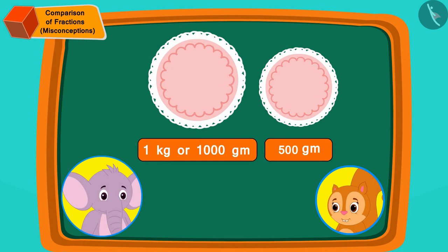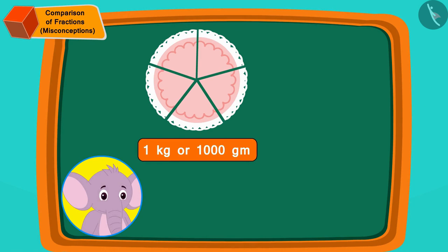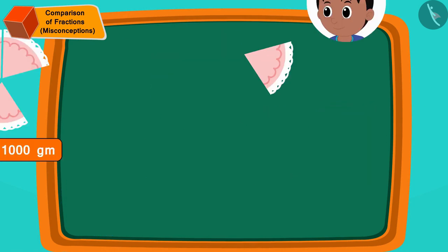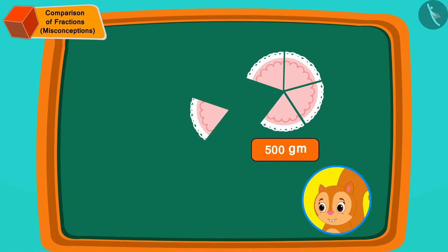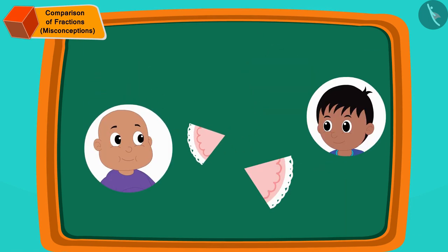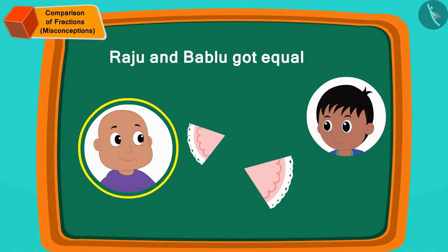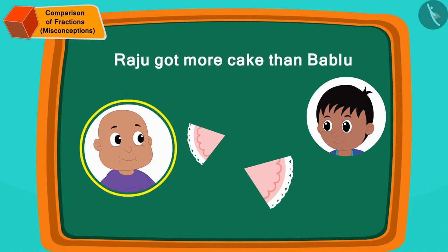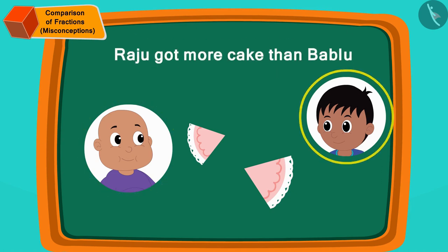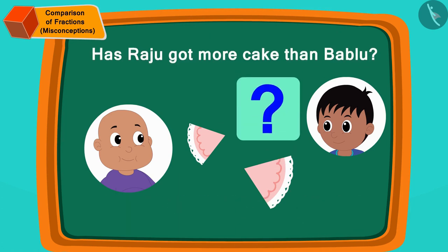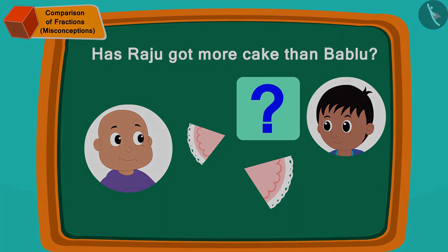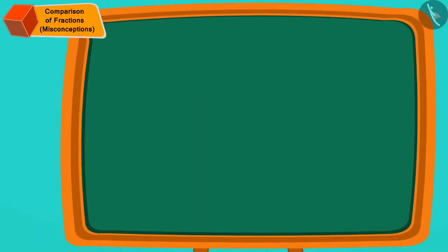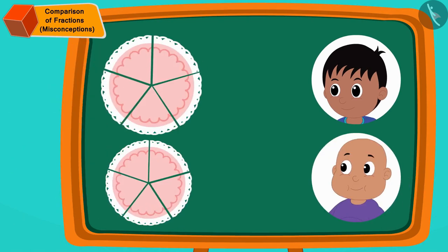Both cut their respective cakes into five equal pieces. Appu gave one piece of his cake to Rajoo, and Chanda gave one piece of her cake to Babloo. Now Rajoo told Babloo that he and Babloo had got equal cake, but Babloo is fighting with Rajoo that Rajoo has got more cake than him. Children, can you tell which of the two is correct?